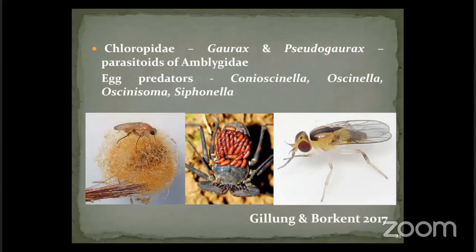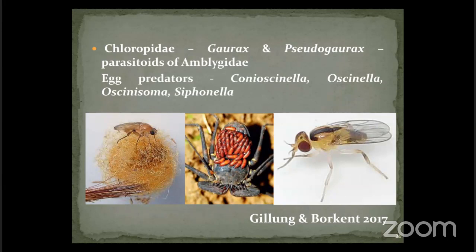The following slides show the chloropid genus Goniops and Pseudogoniops, which develops on the egg sac of Amblypygidae. The female Amblypygidae is carrying the pupa of Chloropidae — that is, the Goniops pupa, which fed on its own egg sacs. This is also phoretic behavior where the pupae are carried by the Amblypygidae spiders.